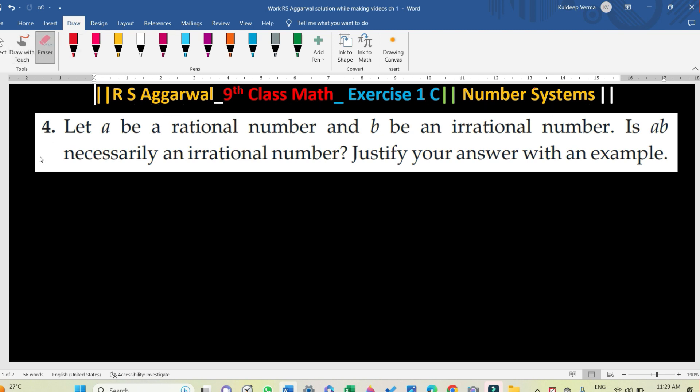What is this question? Look, you have given that a is a rational number, but b is an irrational number. So you have asked, is ab necessarily an irrational number? And you have to give a justification for this, for example.